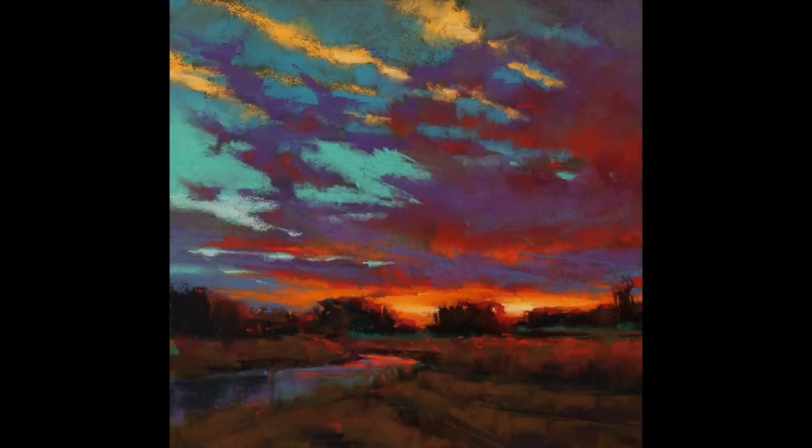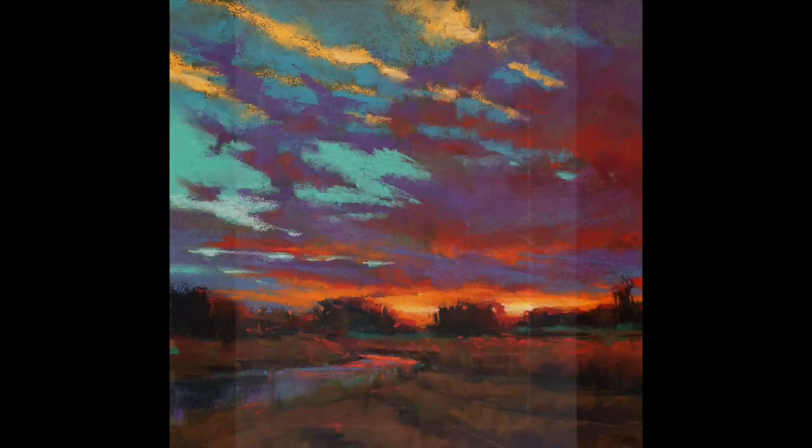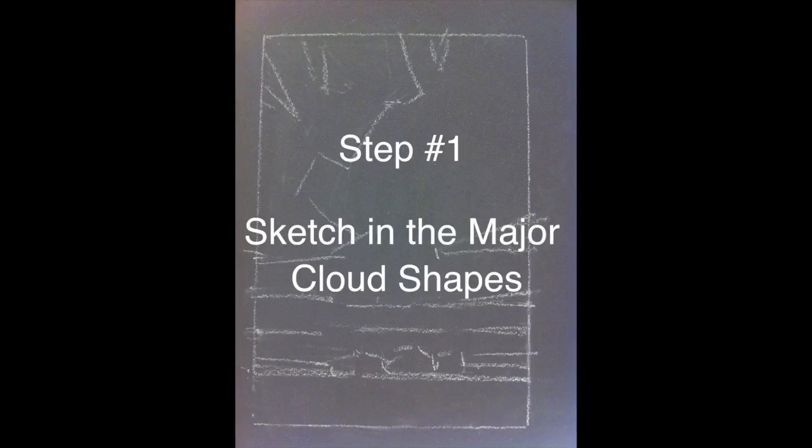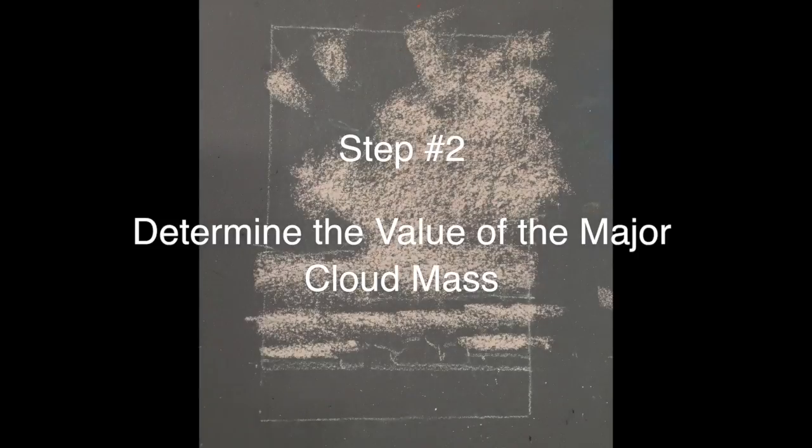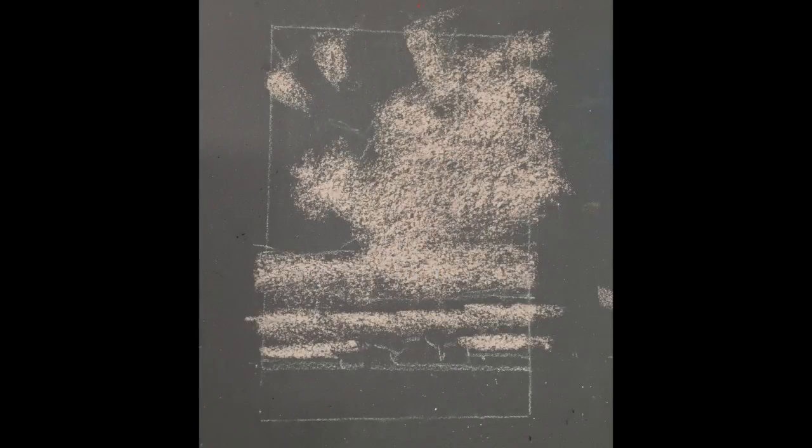So I'm going to outline five pretty simple steps. Number one we want to sketch in the overarching shapes of the cloud masses. Number two we want to identify the average value of those cloud masses and block them in.